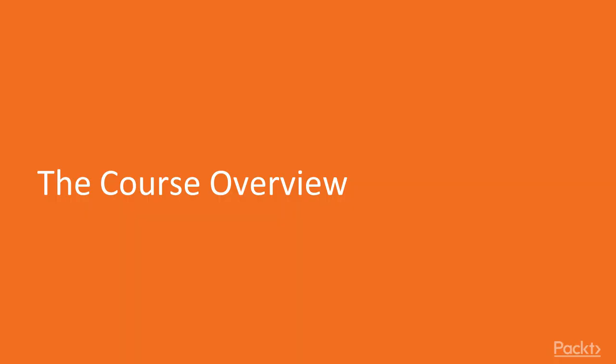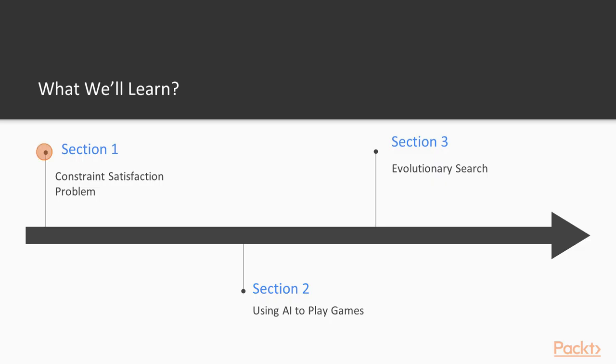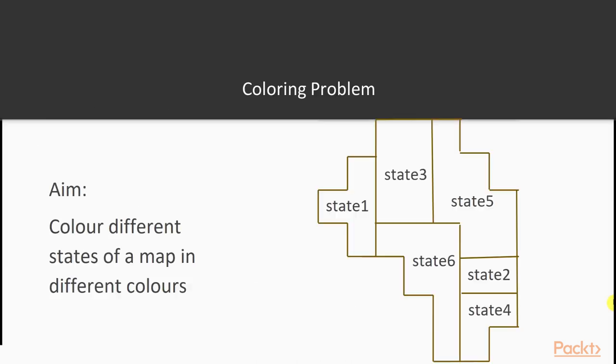This video is a complete overview of the video course in which you will learn advanced AI algorithms to search for solutions in specific cases. In section 1, we will learn about constrained satisfaction problem search while developing a coloring application.